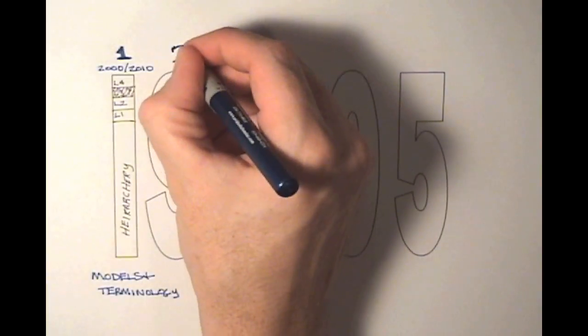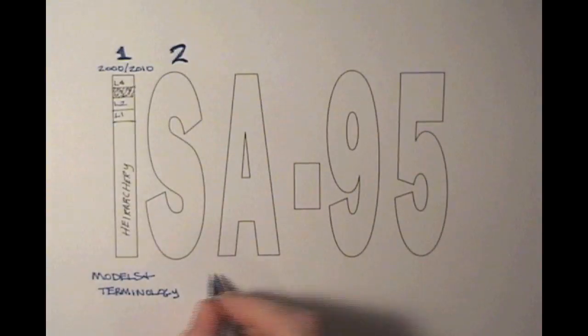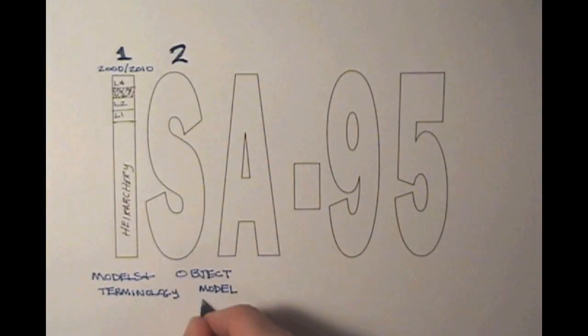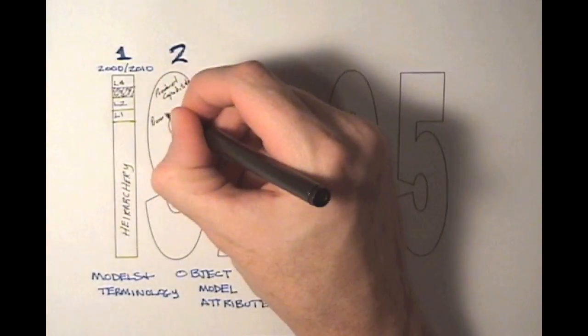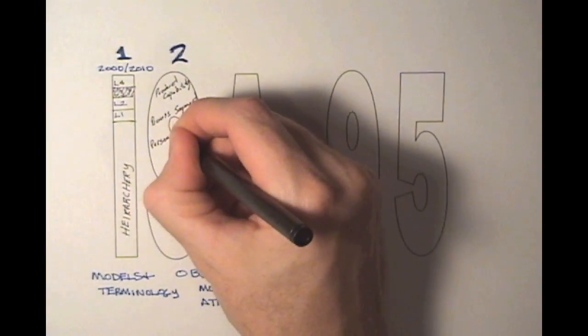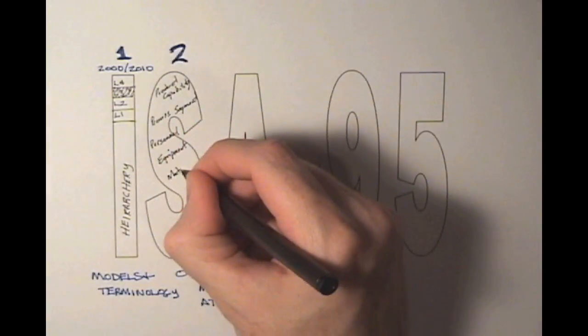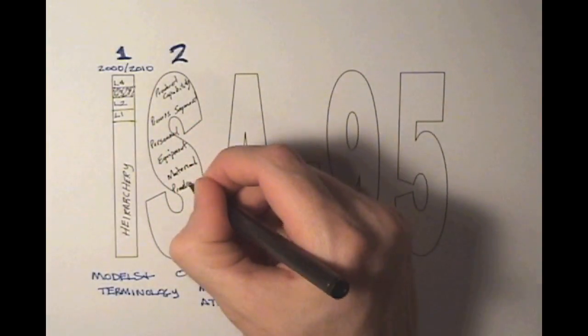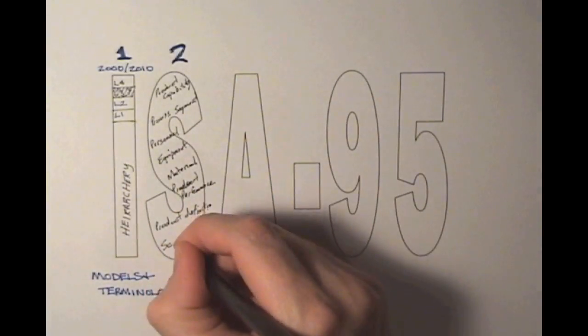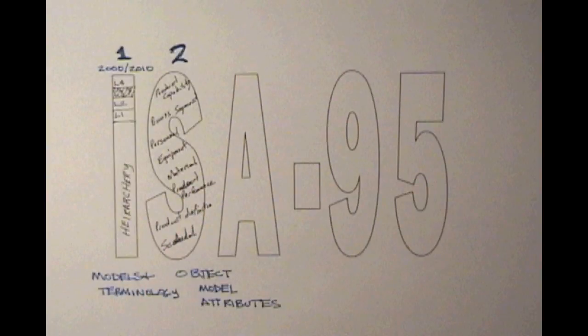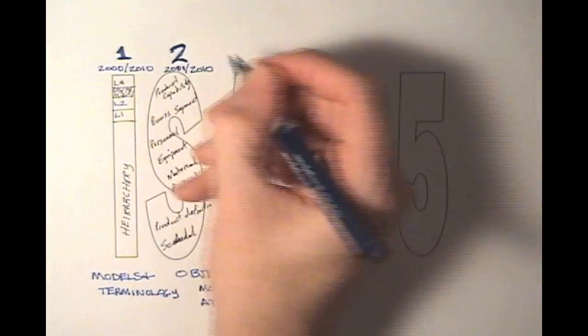Part 2 of the standard lists attributes that can be used to help define a process segment. These are Product Capability, Process Segment, Personnel, Equipment, Material, Product Performance, Product Definitions, and Schedules. Part 2 followed a year later in 2001, with the last revision in 2010.